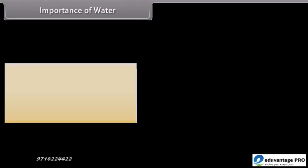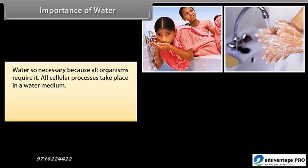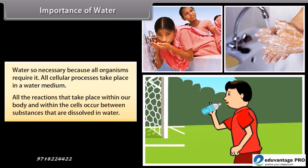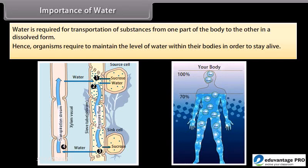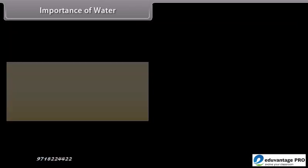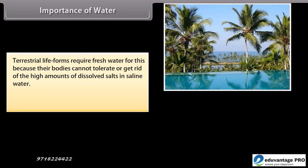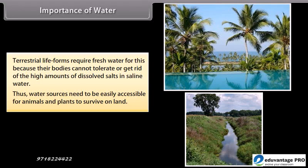Water is necessary because all organisms require it. All cellular processes take place in a water medium, and all reactions within our bodies and cells occur between substances dissolved in water. Water is required for transportation of substances from one part of the body to another in dissolved form. Organisms require to maintain the level of water within their bodies in order to stay alive. Terrestrial life forms require fresh water because their bodies cannot tolerate high amounts of dissolved salts in saline water, so water sources need to be easily accessible for animals and plants to survive on land.